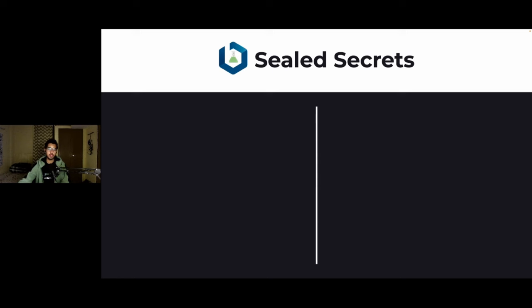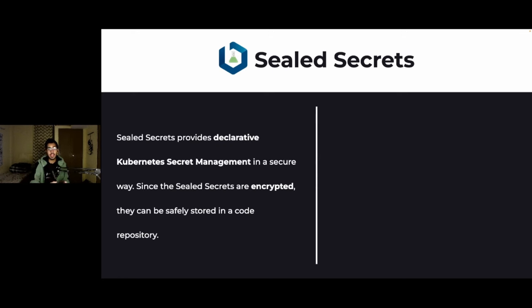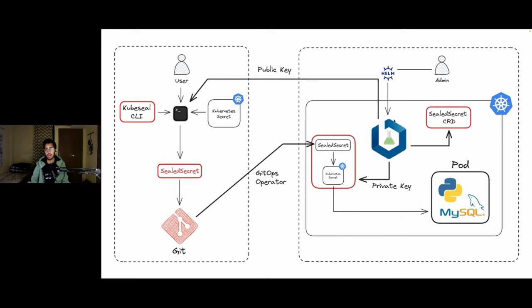Let's start with sealed secrets. Sealed secrets is an open source tool by Bitnami Labs that provides declarative Kubernetes secret management. The main highlight is that sealed secrets are actually encrypted, so you can easily store them in your GitHub repository or any code repository without worrying about anyone cracking your encrypted secrets. Internally, you install an operator in your Kubernetes cluster — using Helm or other methods — and this operator generates two keys: a public key and a private key. The public key is utilized by the kubeseal CLI, which you install on your local system.